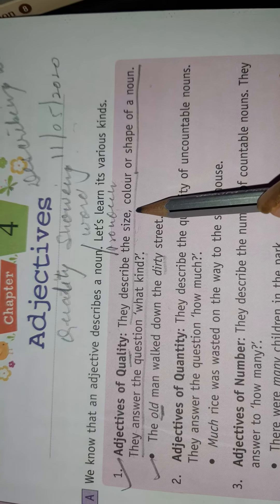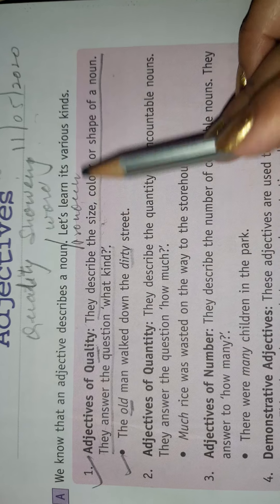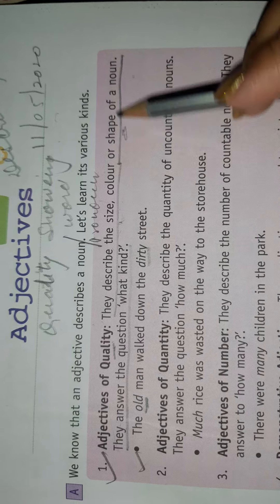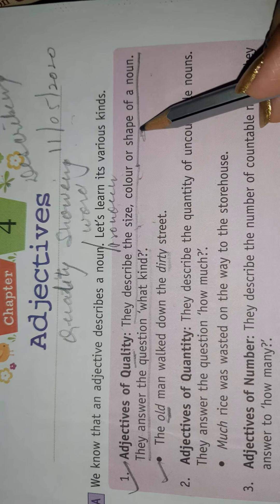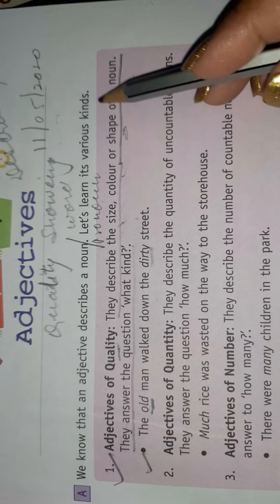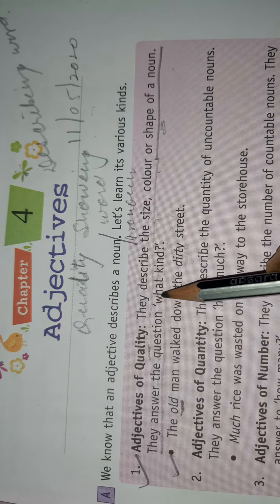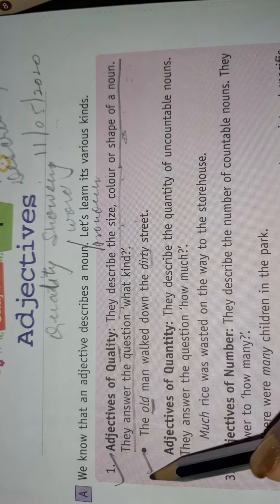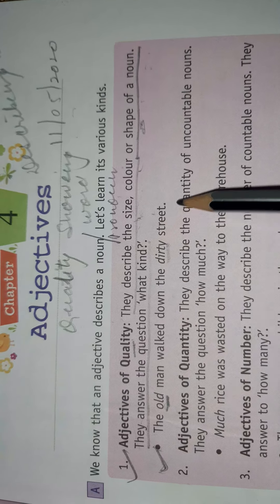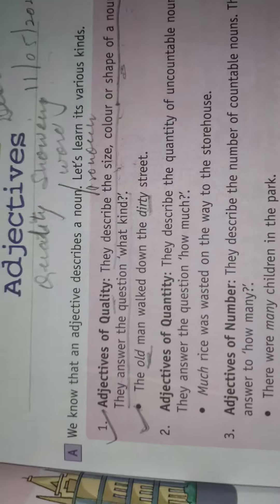They describe the size — big or small; color — red, green, blue; shape — oval, circle, rectangular. For example, 'The old man walked down the dirty street.' In this sentence, 'old' and 'dirty' are adjectives of quality.